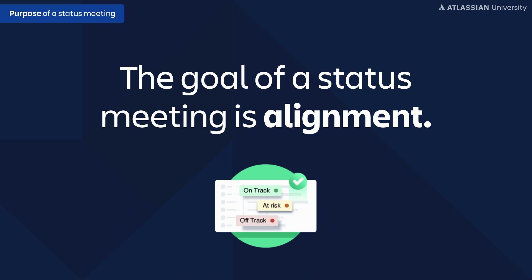The goal of a status meeting is alignment — for everyone to get a sense of what's going on with a particular project or body of work. Traditionally, this looked like a once-a-week meeting where maybe 100 people got together on a phone call. As a project owner, I'd have maybe 30 seconds to share an update, then spend the next two hours just listening to everyone else's work.